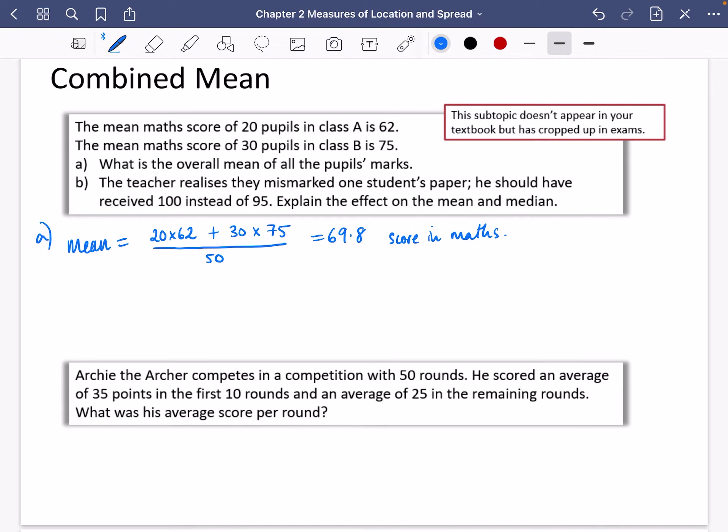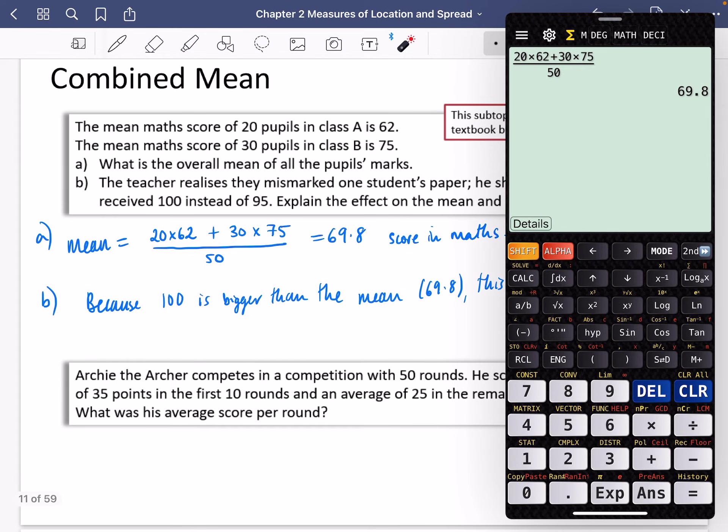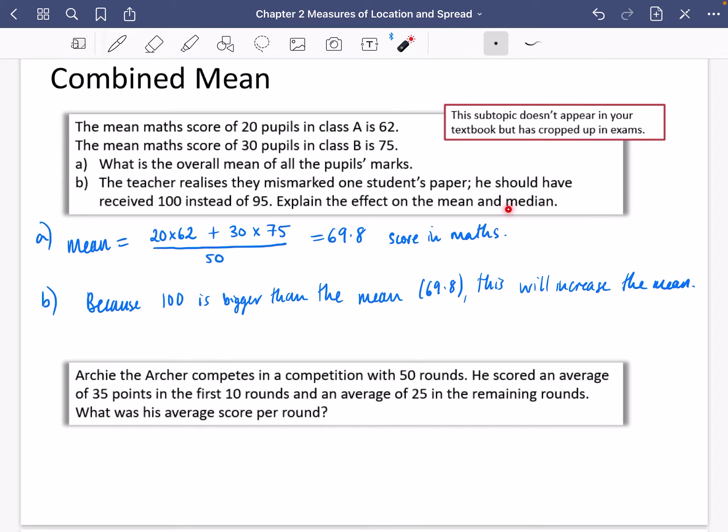And then it says for part B of the question that the teacher realizes they miss marked one student's paper. He should have received 100 instead of 95. Explain the effect on the mean and the median. So let's think what might happen to this. Because 100 is bigger than the mean of 69.8, this will increase the mean because you're adding on an extra five marks. So somewhere in this denominator, there's going to be an extra five marks. And I guess I can show you how it will increase. If you add an extra five there, it goes from 69.8 to 69.9. But it isn't going to affect the median because the median doesn't get affected by the values on either end.